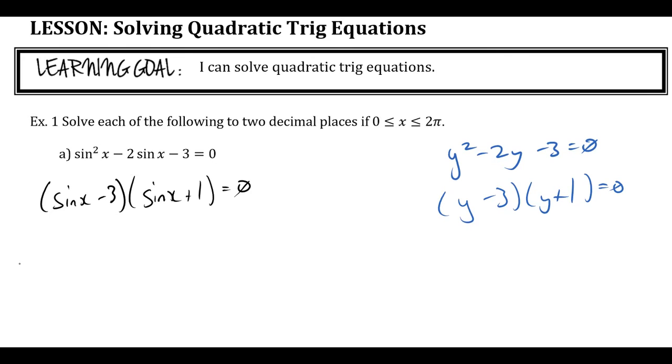And then same thing, zero product property. This is from grade 10. That means that sinx minus 3 is 0, or sinx plus 1 is 0. Same idea. Which means sinx is 3, or sinx is negative 1.